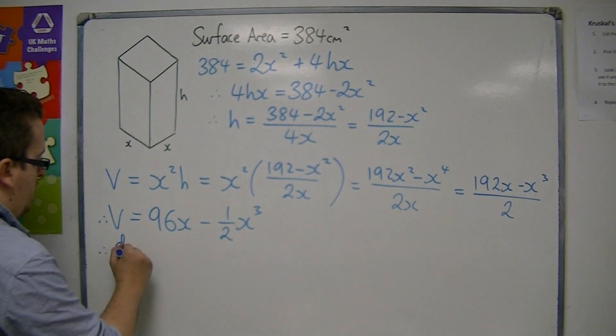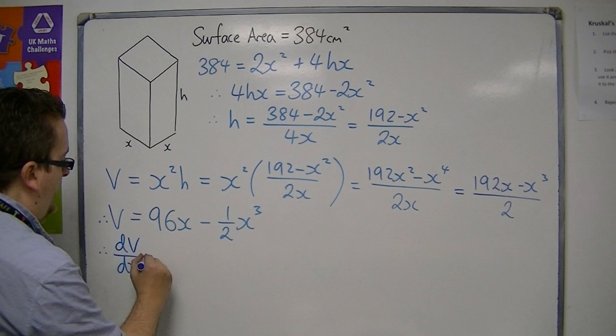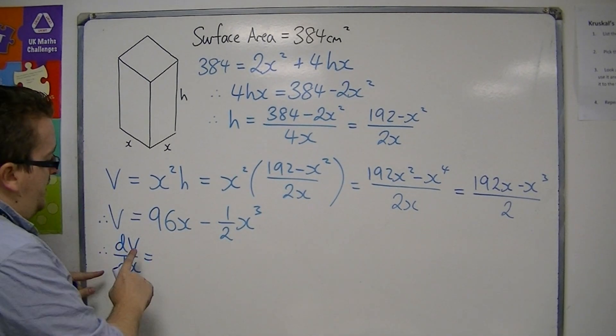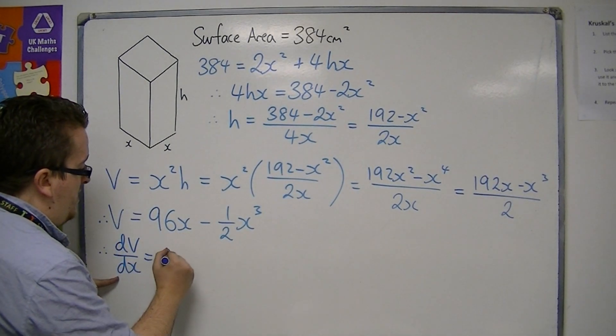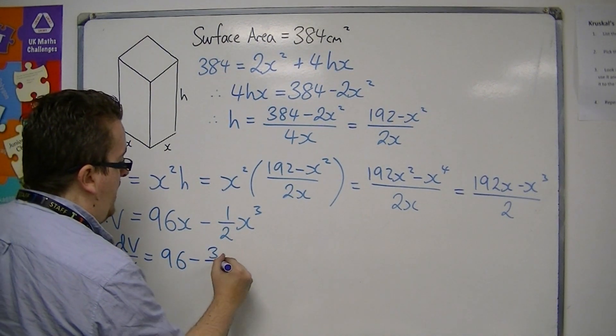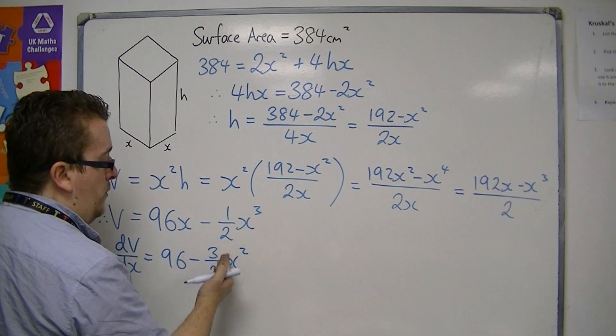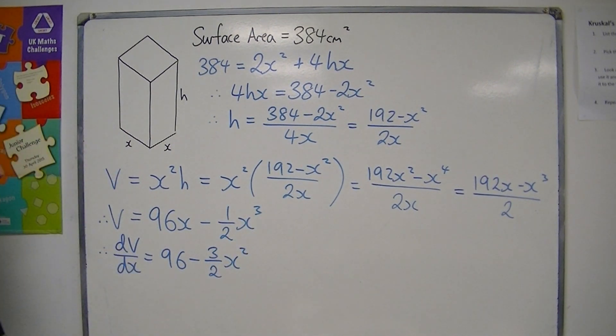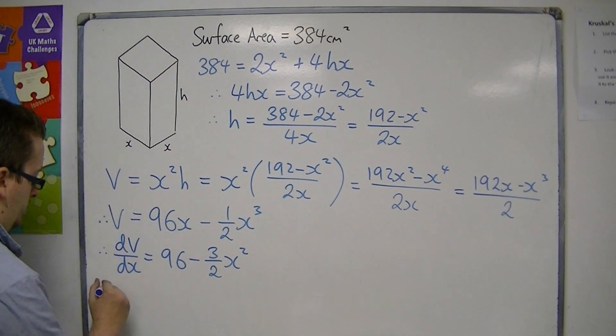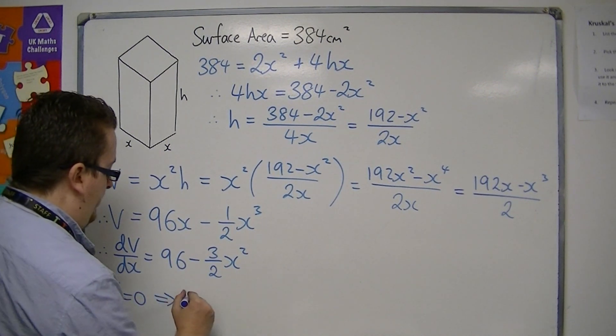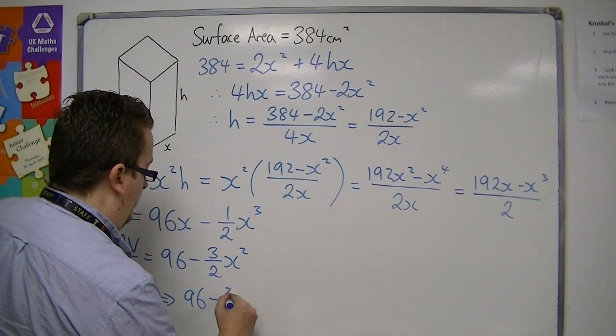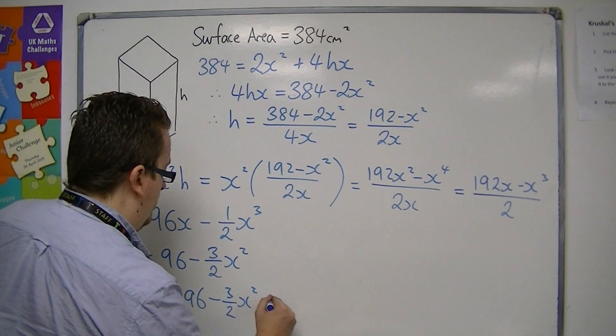So if I differentiate this, this is now dV by dx. dV by dx is 96 take away 3 halves x squared. Multiply the half by 3 and then take 1 from the power. Now the stationary point is going to be when this is 0. So that implies that 96 minus 3 halves x squared would be 0.